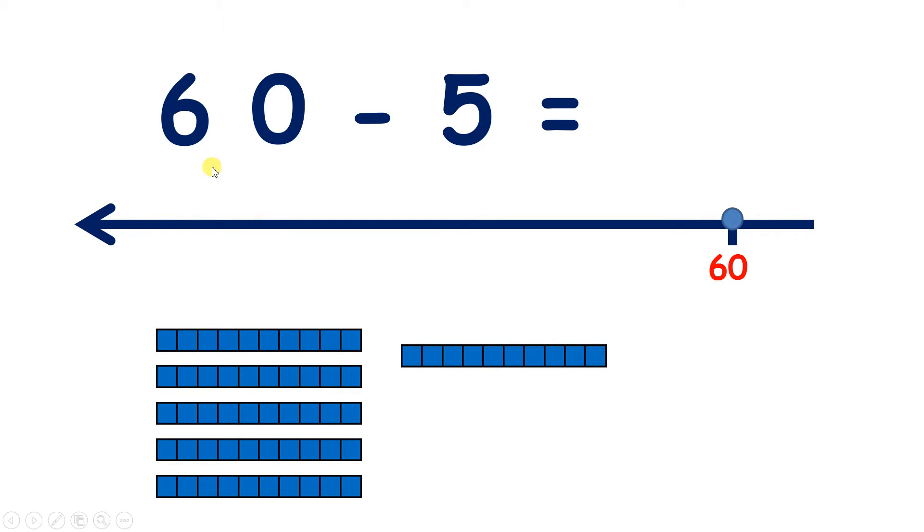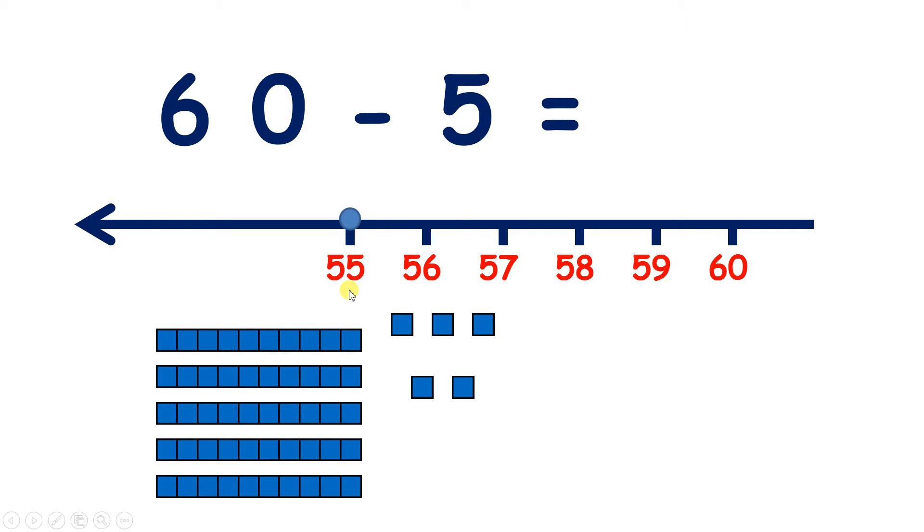So we have 60 minus 5. We can break up one of our tens and then subtract 1, subtract 2, subtract 3, subtract 4, and subtract 5 to give us our answer, 55.